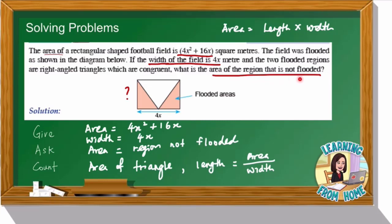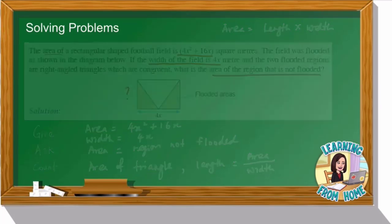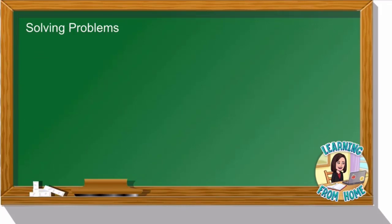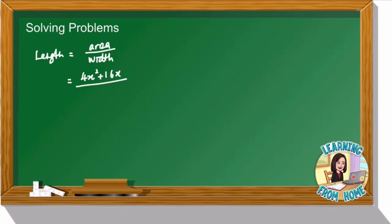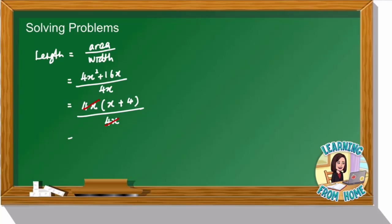Let's start the calculations. First, we find the length: length = area ÷ width = (4x² + 16x) ÷ 4x. To divide, we factorize the area first by taking out the common factor 4x, leaving (x + 4) inside. So we have 4x(x + 4) ÷ 4x. The 4x cancels, so the length is x + 4.